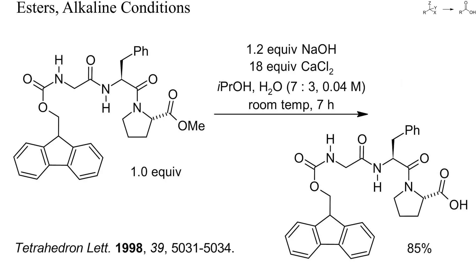Alkaline saponifications become interesting when the starting ester contains other base-sensitive functional groups. Here, for instance, the methyl ester of a short Fmoc-protected peptide had to be saponified without cleaving the Fmoc group. This could be achieved with a mixture of sodium hydroxide and calcium chloride in aqueous isopropanol.